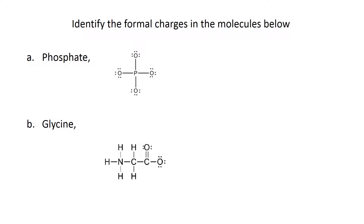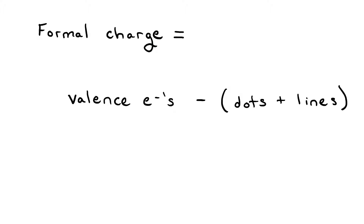Let's try to find the formal charge on the atoms in a molecule. The exercise says to identify the formal charges in the molecule below. We have phosphate and the amino acid glycine. You can find the formal charge by taking the number of valence electrons that are normally around an atom when it's neutral, and subtracting the dots and the lines around the atom when it's bonded in the molecule.